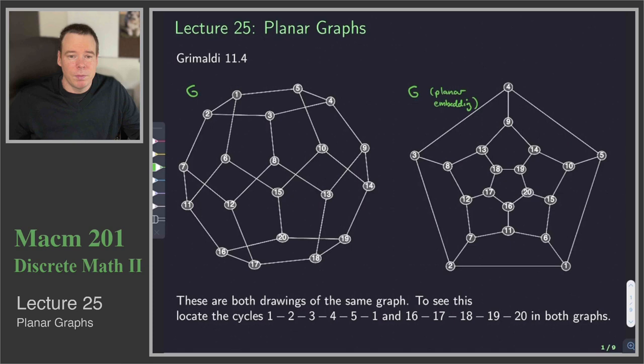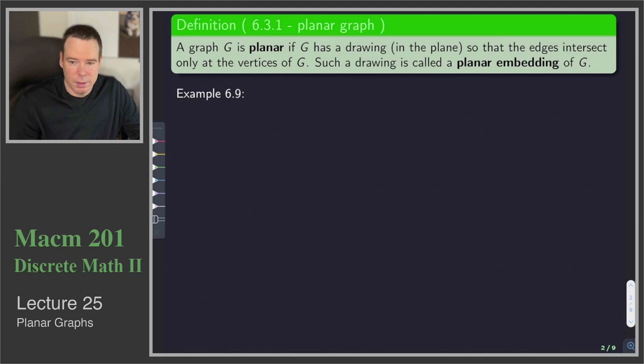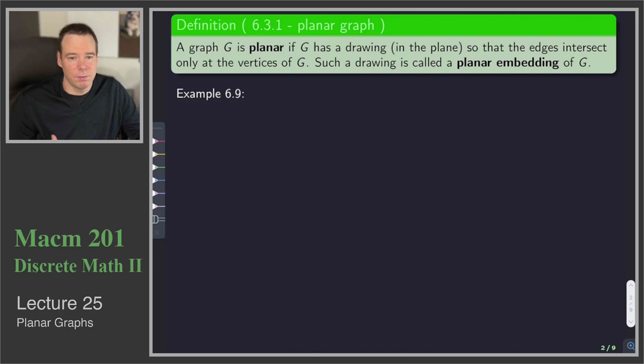The answer is yes, and there's the drawing on the right. This gives rise to our main definition for this lecture: a graph G is called planar if it has a drawing in the plane so that edges intersect only at the vertices. That's what it means to be a planar graph — you can find a drawing for which the edges only intersect at vertices. Such a drawing is called a planar embedding. There could be more than one way to draw the graph as a planar embedding.